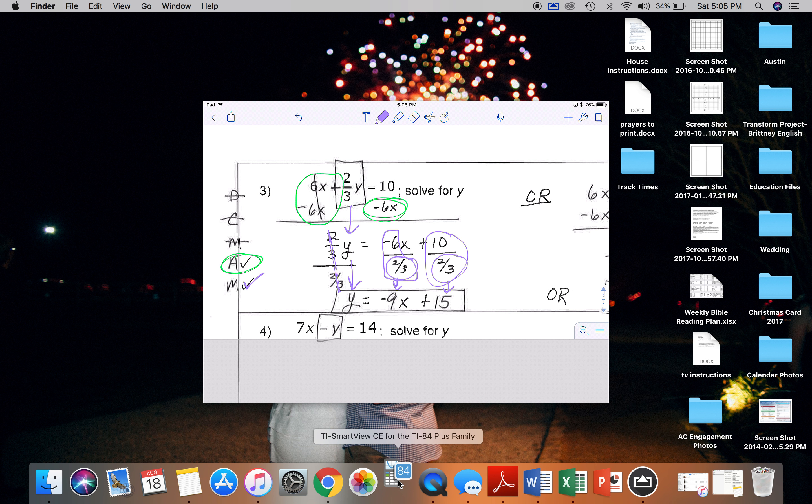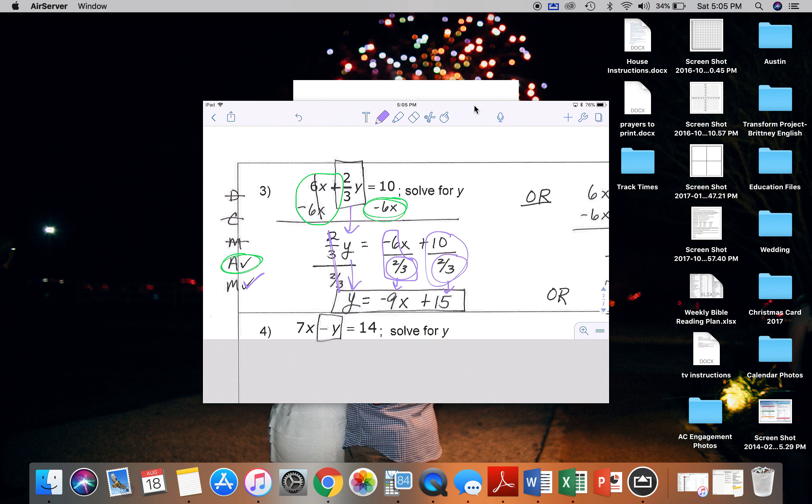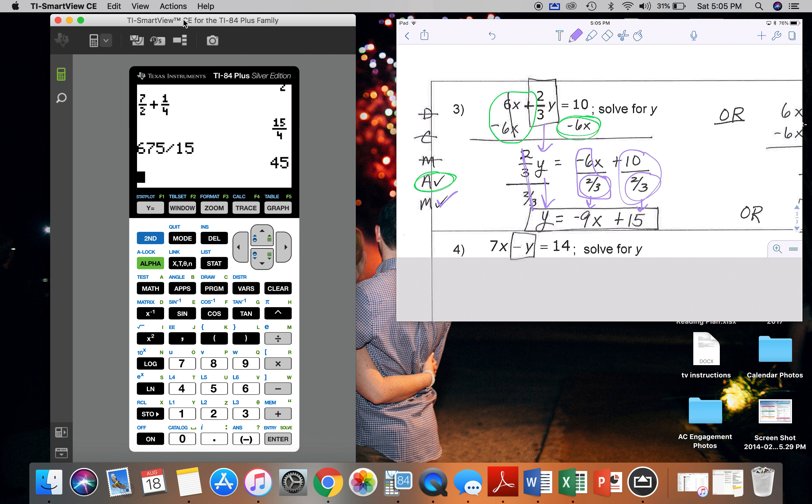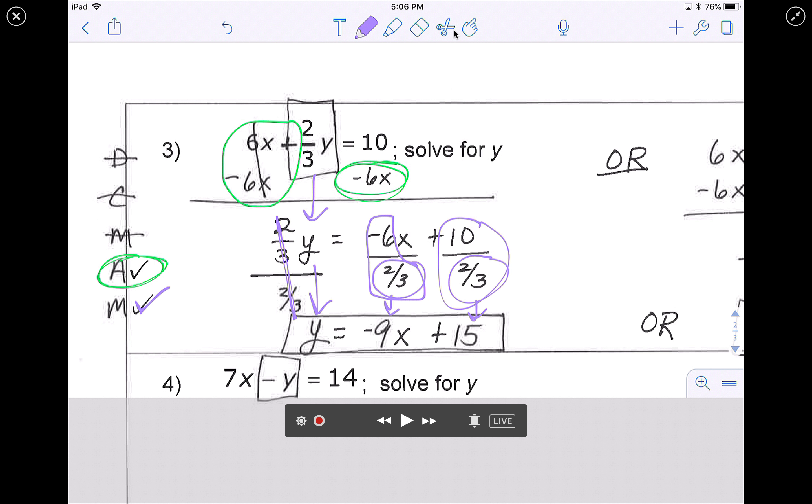In your calculator, we'll see if it'll show up really quickly. Remember that you can click alpha y equals in order to see or to put in a fraction. So if I was doing this problem, I would say negative 6 divided by alpha y equals enter 2 over 3, and that's where the negative 9 comes from, and you would follow the same steps for 10 divided by 2 thirds.